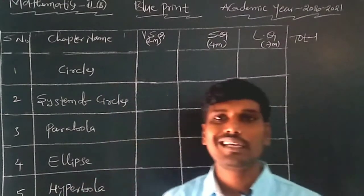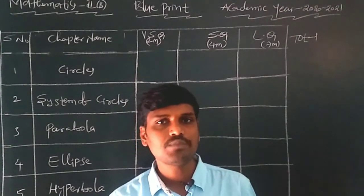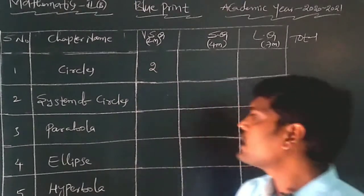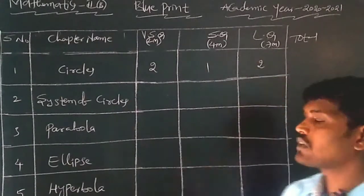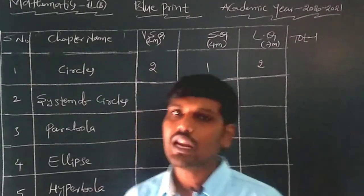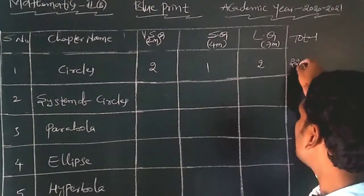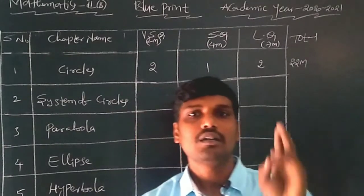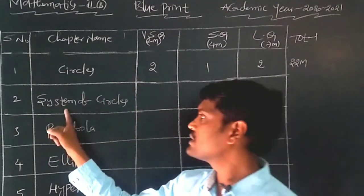The first chapter is Circles. In this chapter, coming to the IP examination: two 2-mark questions, one 4-mark question, and two 7-mark questions. Total marks: 2+2+4+7+7 = 22 marks coming to the Circles chapter.